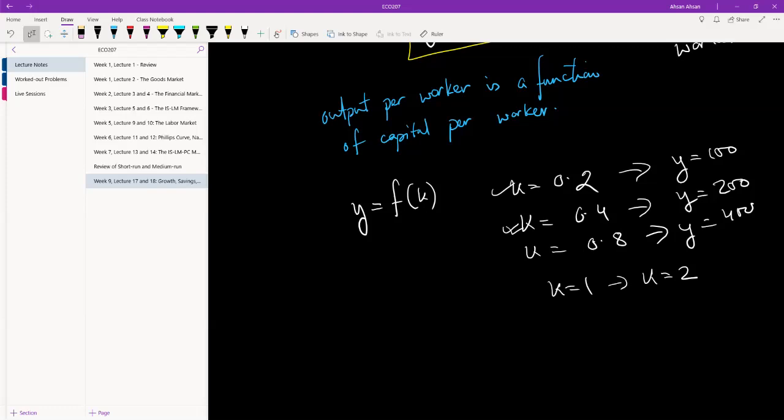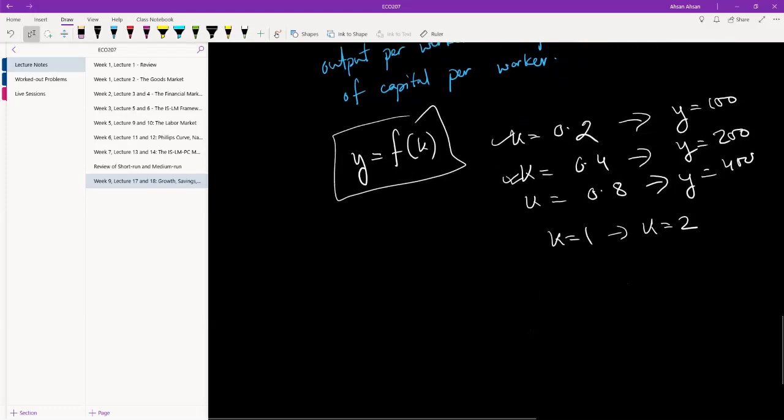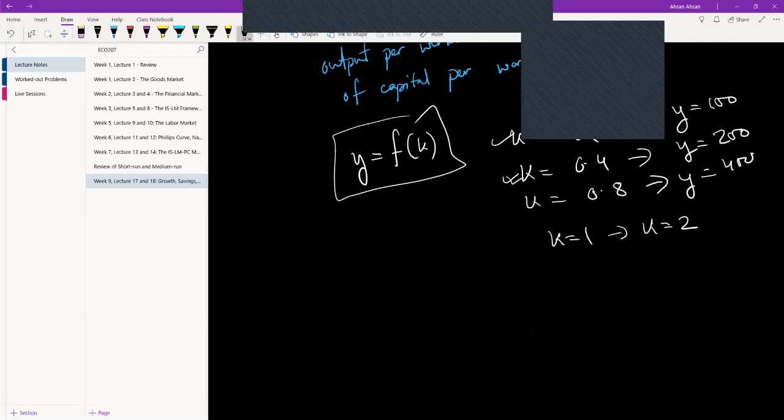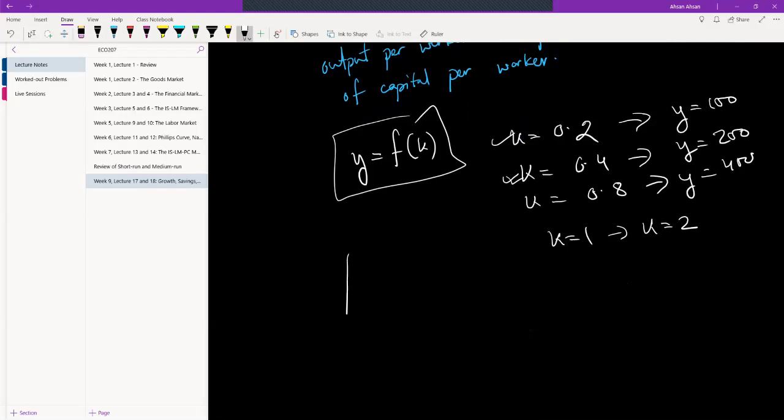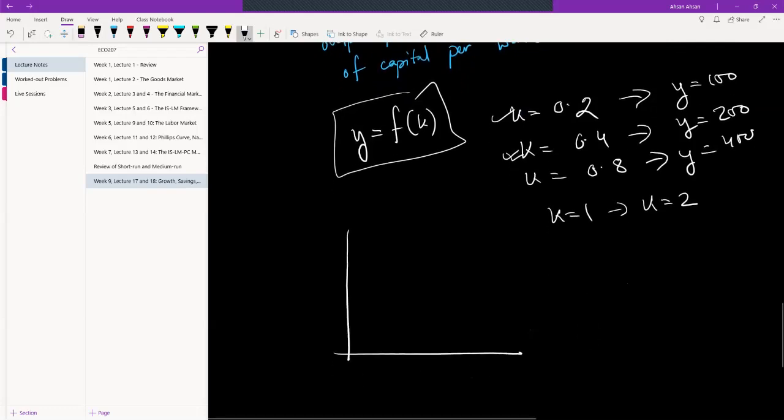As a result, now we're going to try and draw a diagram for this. And this is what the diagram is going to look like. So over here we have capital per worker which is k, over here we have output per worker which is y.